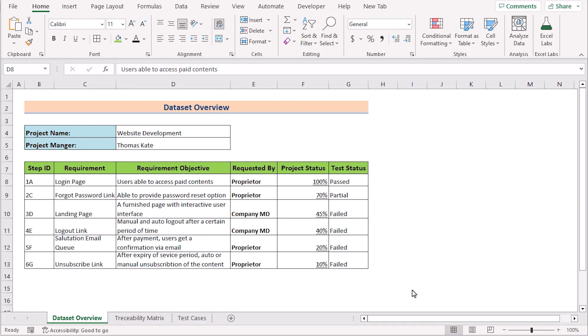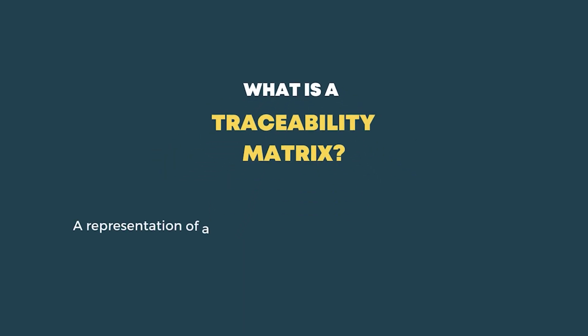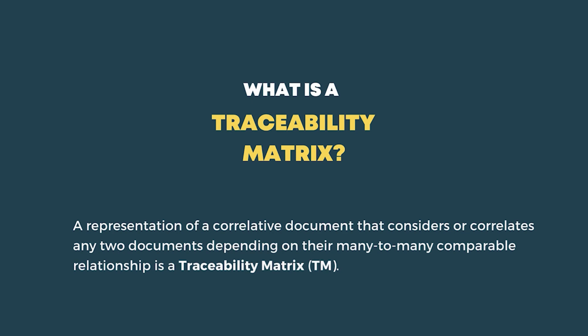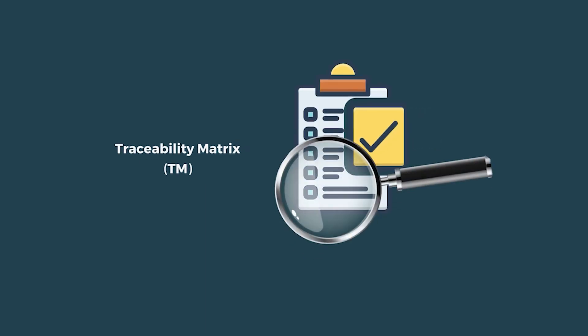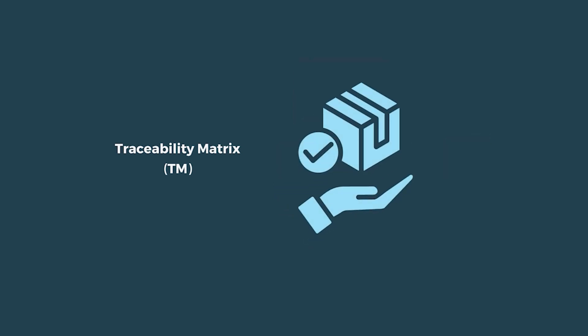The first question: what is a traceability matrix? A traceability matrix is a representation of a correlative document that correlates any two documents depending on their many-to-many comparable relationship. A traceability matrix establishes forward, backward, or bi-directional relationships among its fields and checks whether the requirements are addressed or not. By doing that it ensures the fulfillment of those asked requirements.